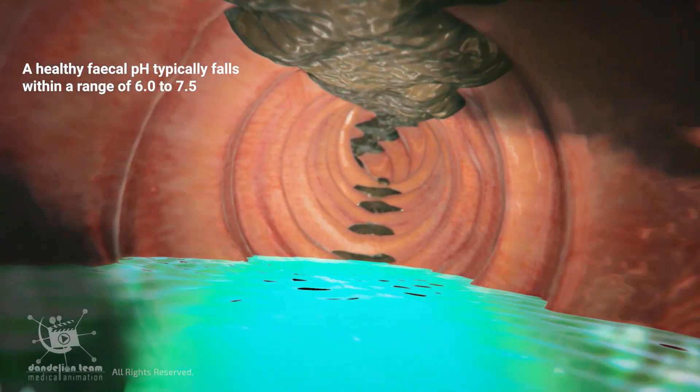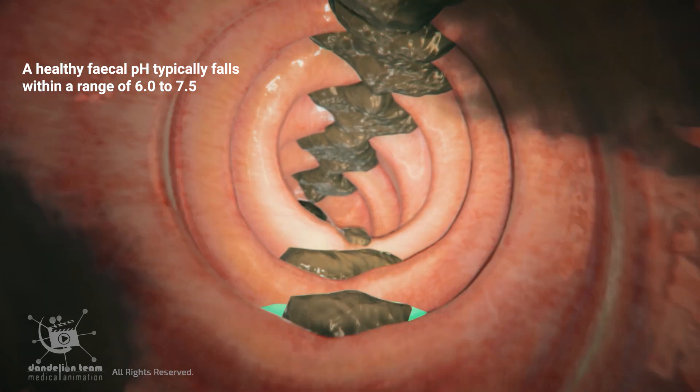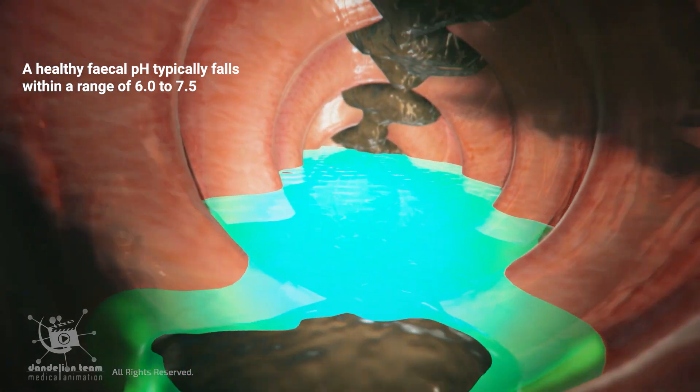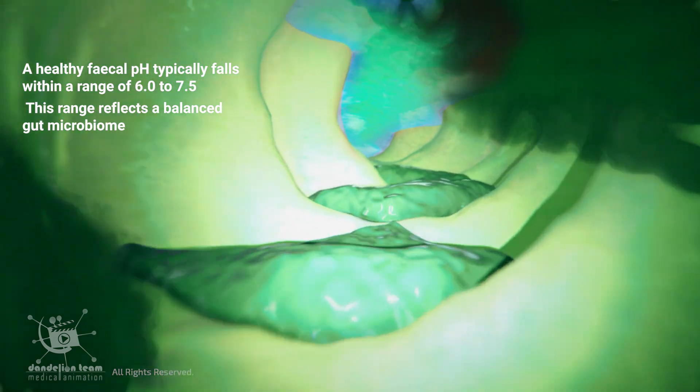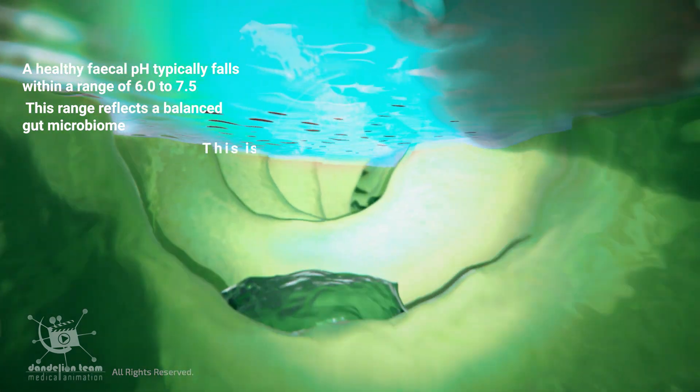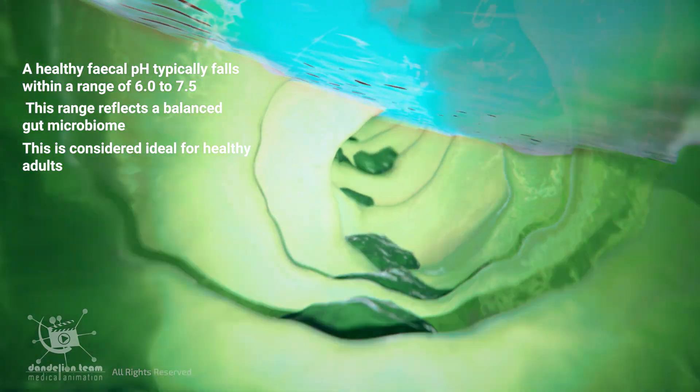A healthy fecal pH typically falls within a range of 6.0 to 7.5. This range reflects a balanced gut microbiome and is considered ideal for healthy adults.